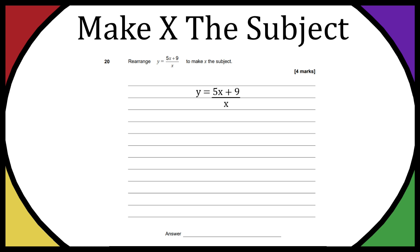Now making x the subject effectively means you have x by itself on one side of the equals and then everything else on the other side. So for example we currently have y as the subject. Hopefully that makes sense.